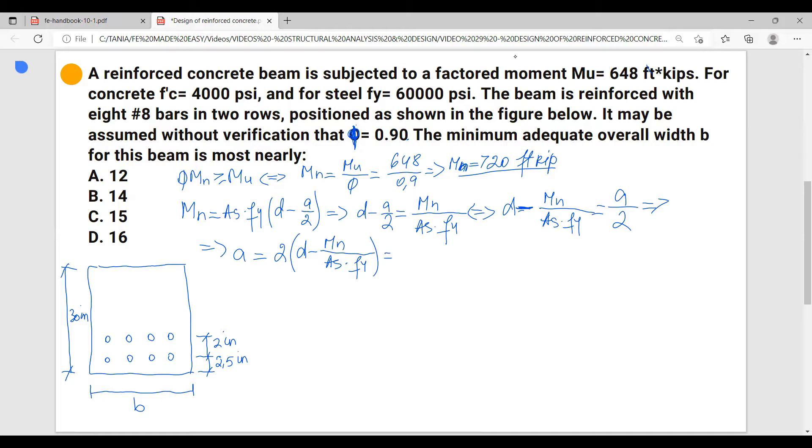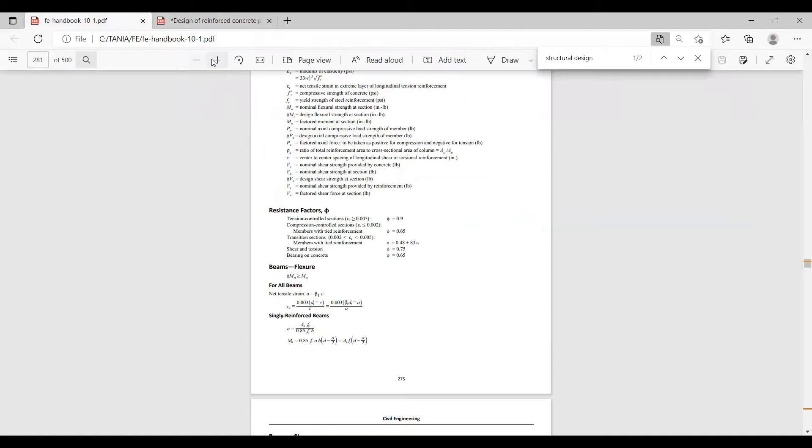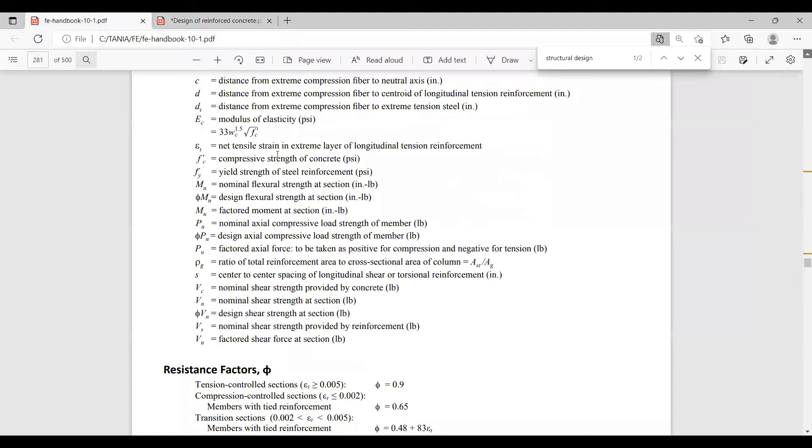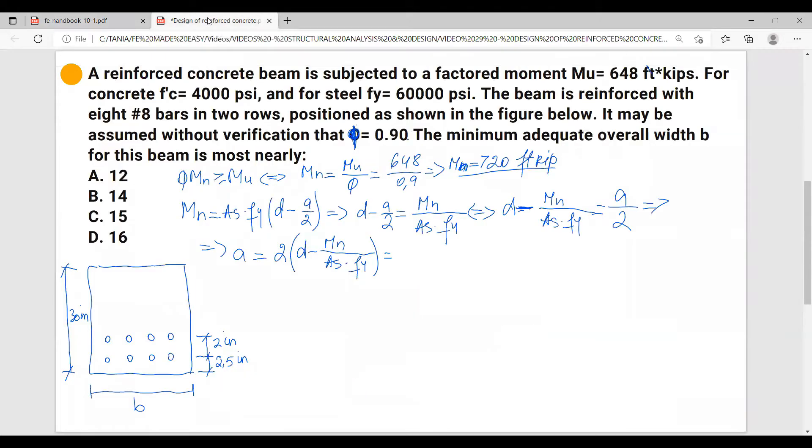So let's see. Now d, let's see what is d. It's shown right here. d is the distance from extreme compression fiber to centroid of longitudinal tension reinforcement. So d is this distance, compression fiber to centroid.